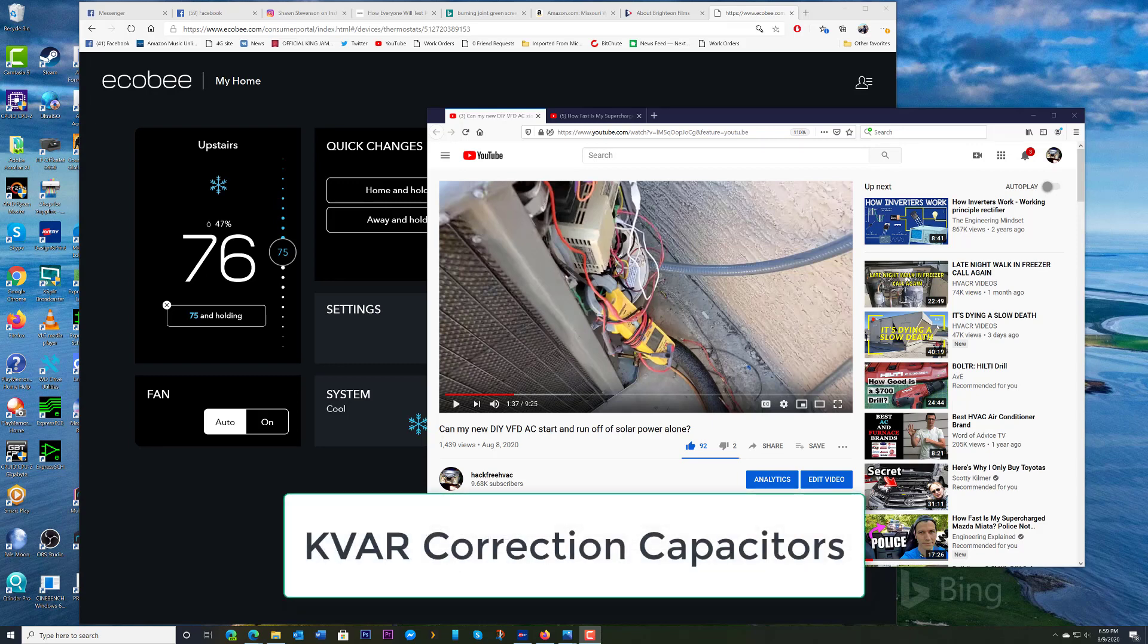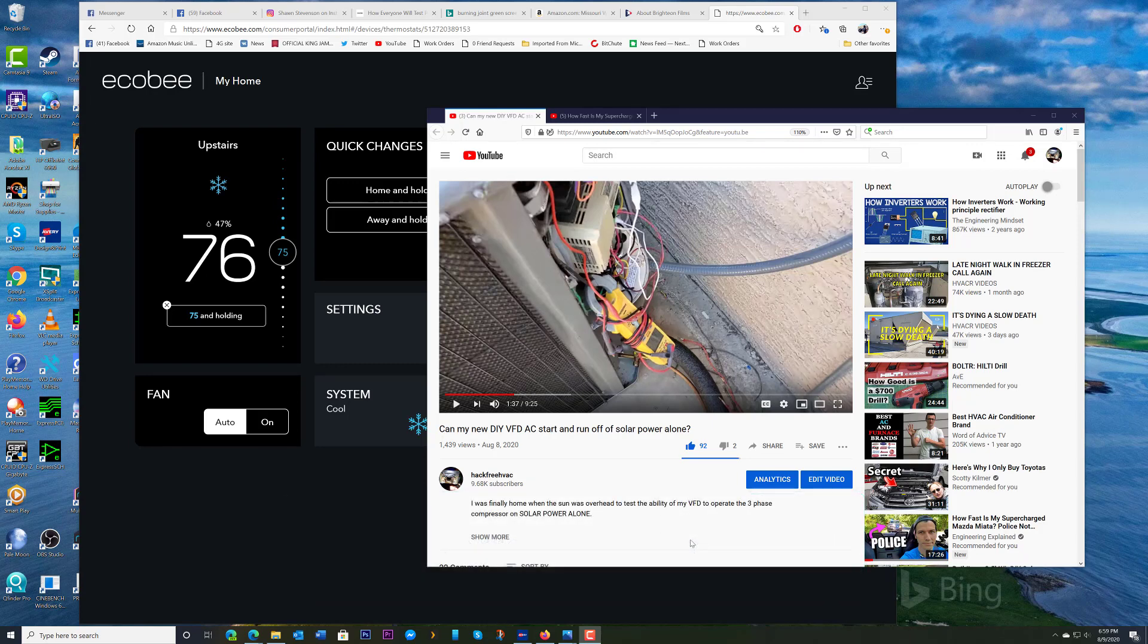With the capacitors it actually just goes back and charges the capacitors right there locally at the motor. And actually your power you read on your line side coming from your utility goes down when you have those power factor capacitors. That is if your power factor was way off, usually from a larger motor when it's needed.